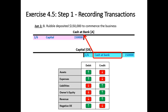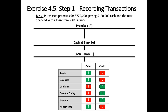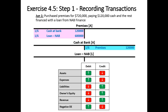The second transaction: purchase premises for $720,000, paying $120,000 cash and the rest financed by a loan from NAB Finance. Let's take the two amounts separately. For the cash portion of $120,000, we take that on the first transaction and match it up with a credit in the cash ledger. Secondly, we'll add $600,000 to the premises ledger and this time we'll reference loan.